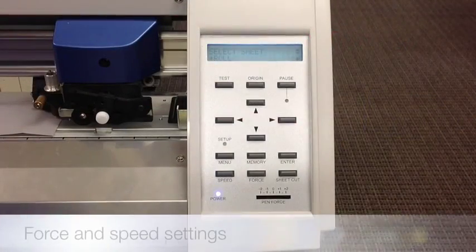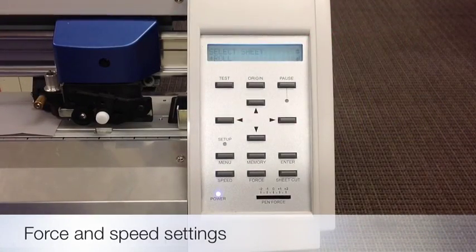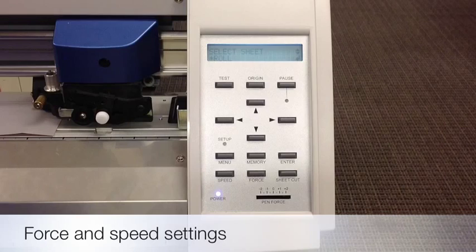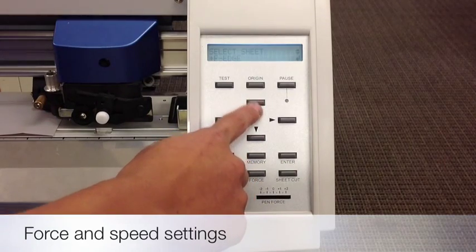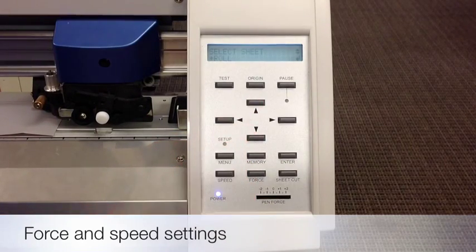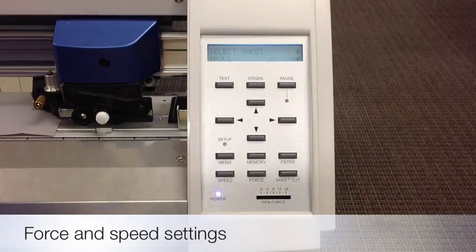To load the vinyl, you need to tell the machine what you are currently cutting. So your first step is to tell it you're using a roll. Pushing the up or down arrows, you can switch from roll to piece. Make sure that you select roll if you are using a roll, and then push the enter button.